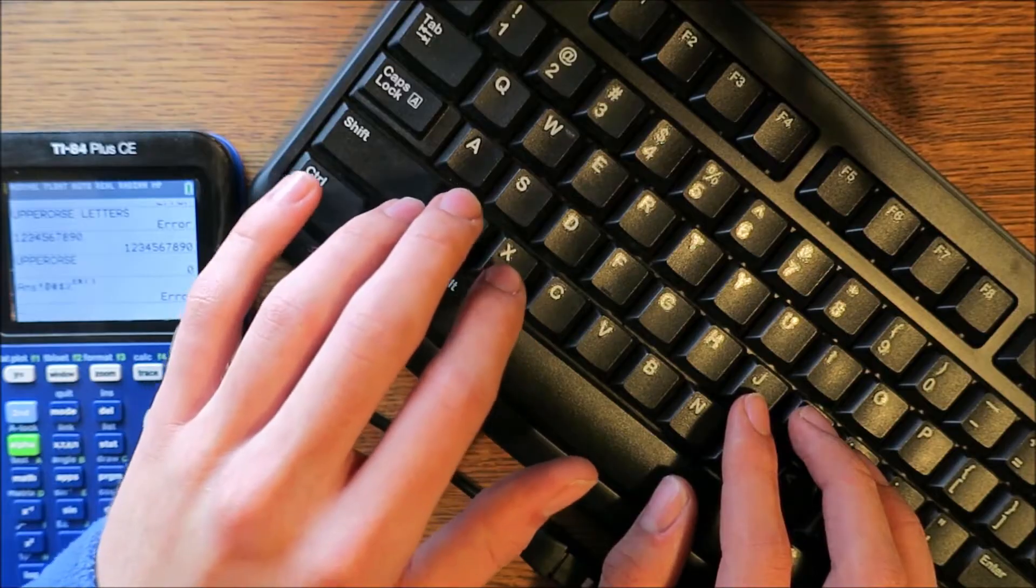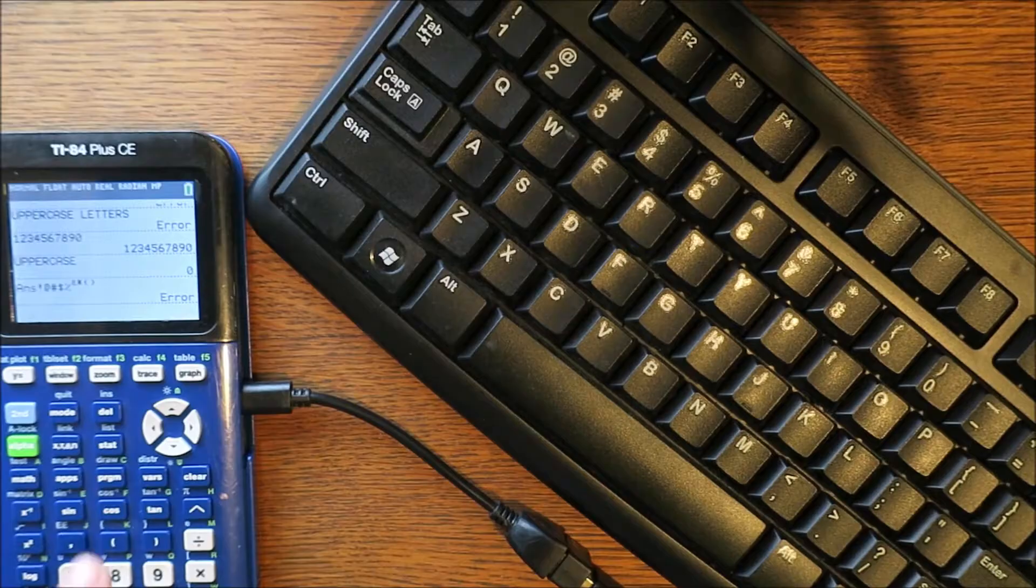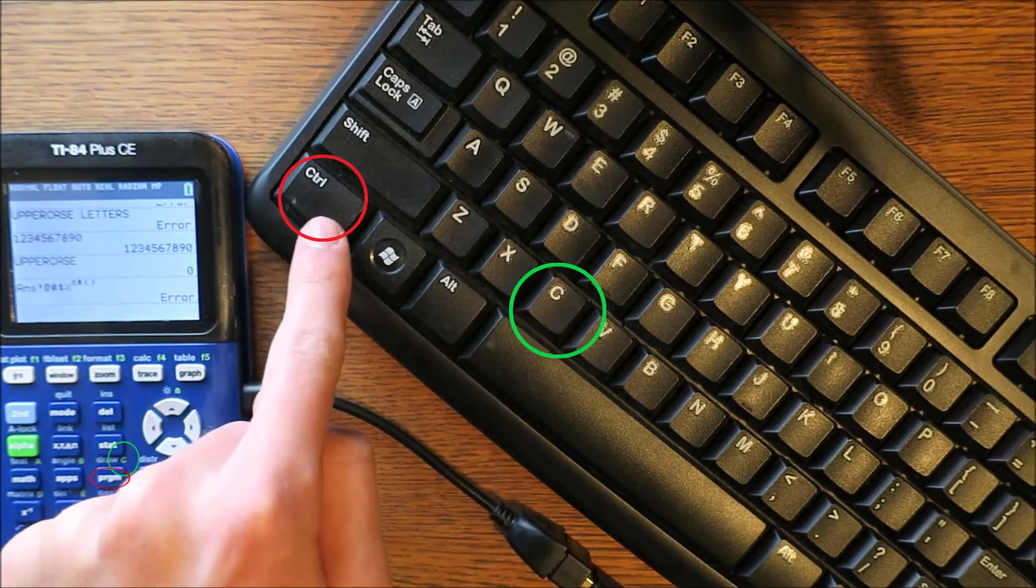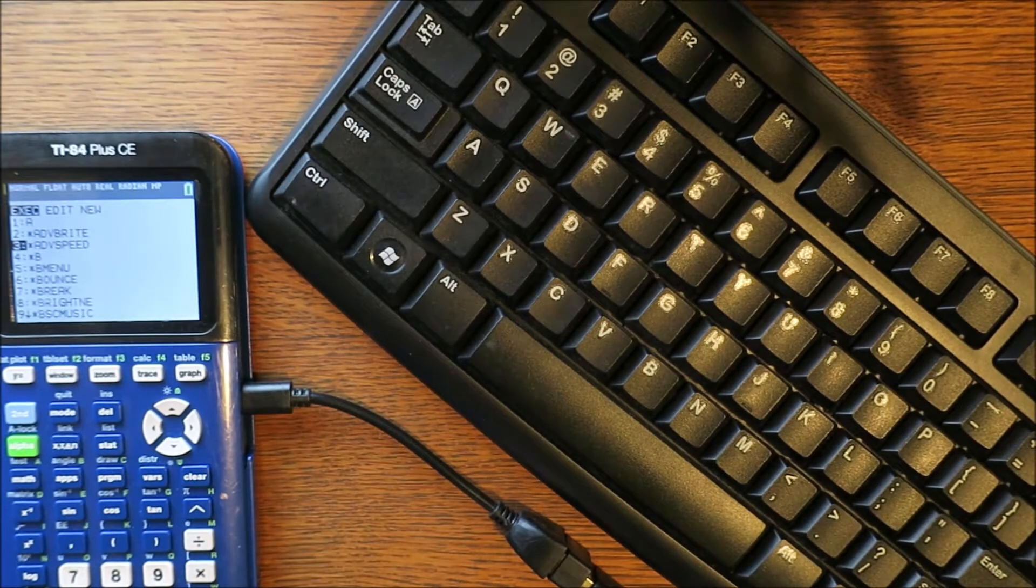Now what if you want to get into one of the menus? That's what the control and alt keys are for. To open the menus printed right on the keys, press and hold control, then find the letter that's right above the menu button you want to press. In my case, I want to open the program menu, so I press C.